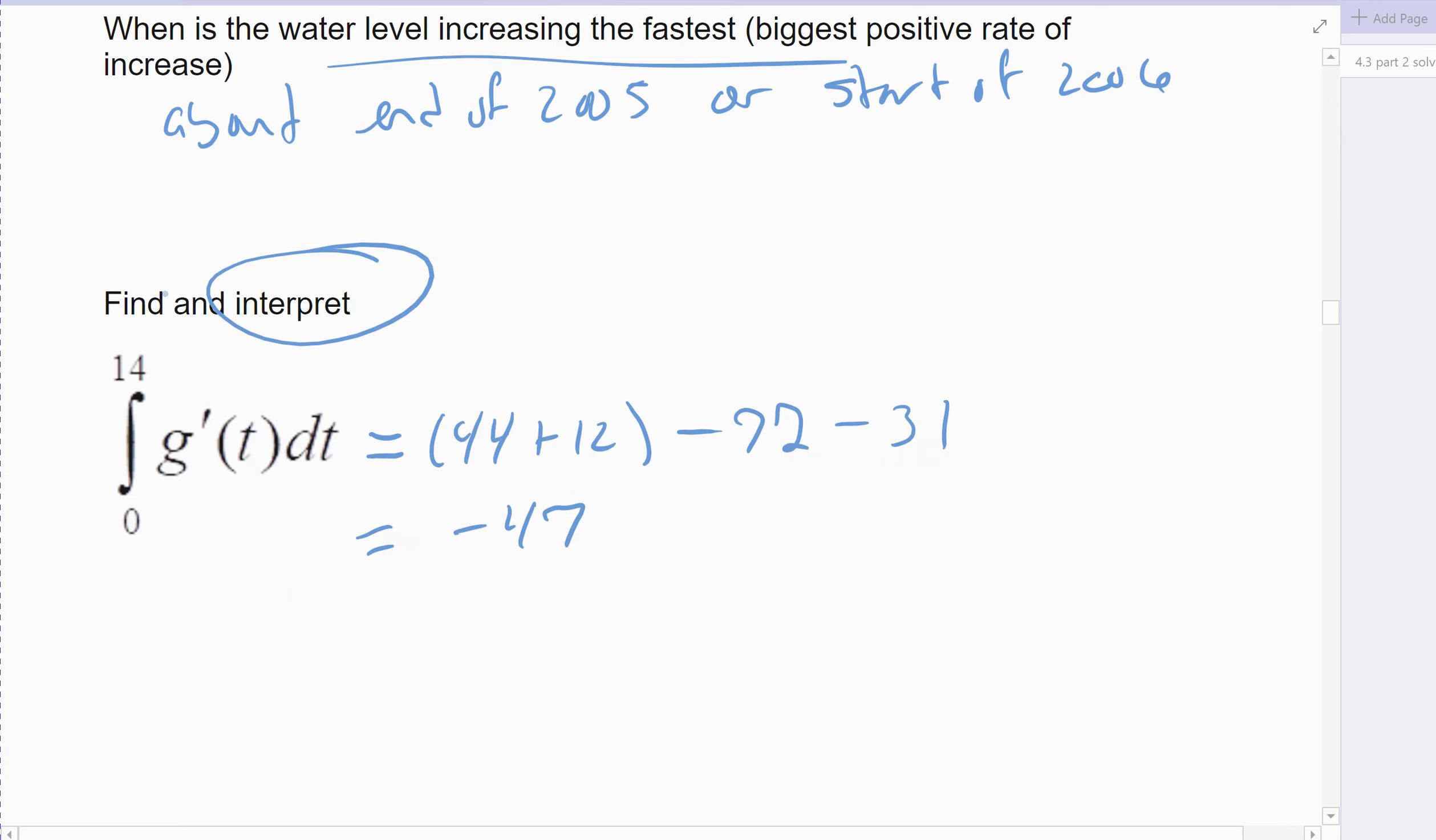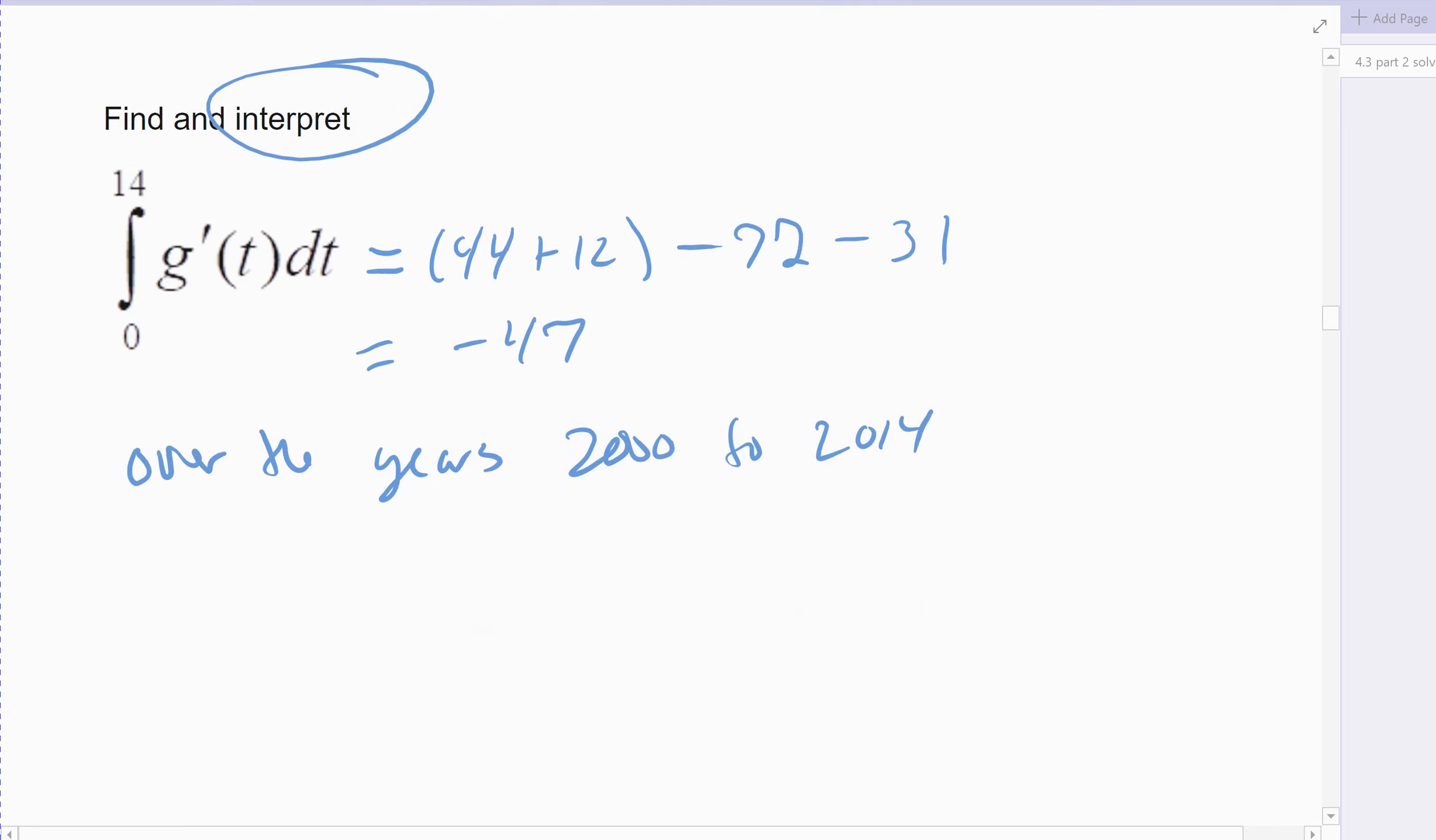And then what does that mean? Interpret. That negative 47 means a lot. It means over the years 2000 to 2014, the pond had a net loss, decrease, however you want to word it, of 47,000 gallons of water.